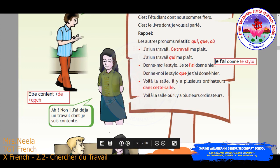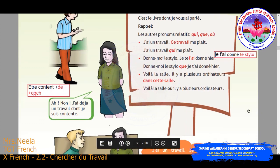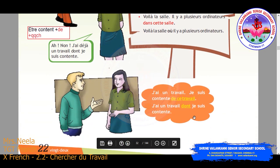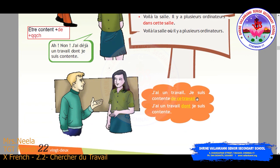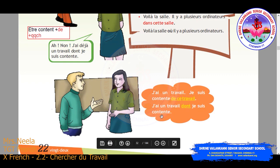We can see that in detail with another dialogue: 'j'ai un travail, je suis content de ce travail.' Now see: 'j'ai déjà un travail' — 'dont je suis content de quelque chose.' The 'de' plus the noun is replaced by 'dont'. So: 'j'ai un travail dont je suis content.'